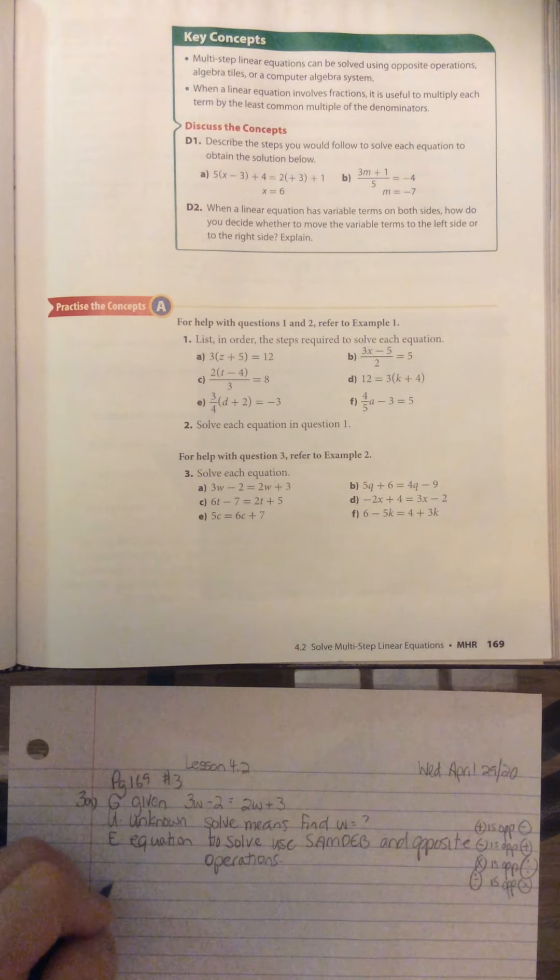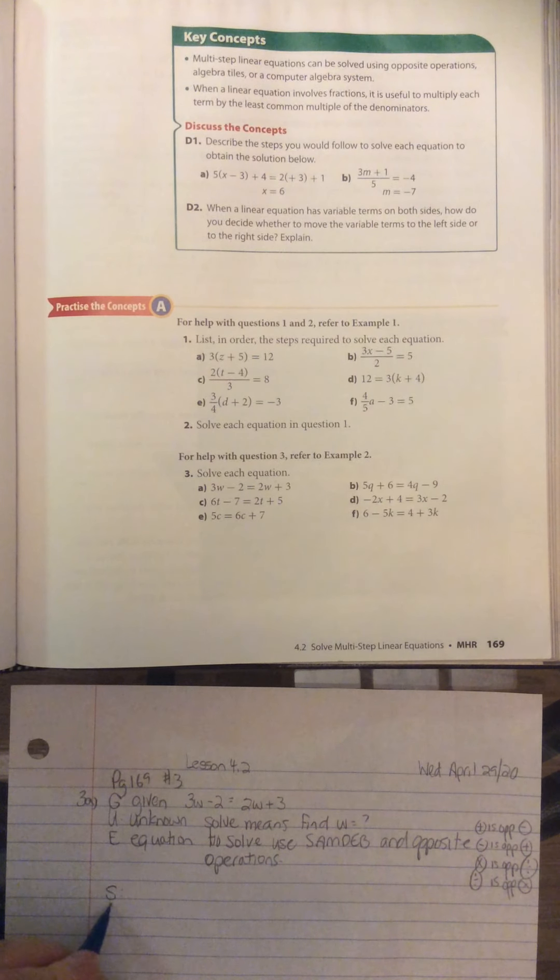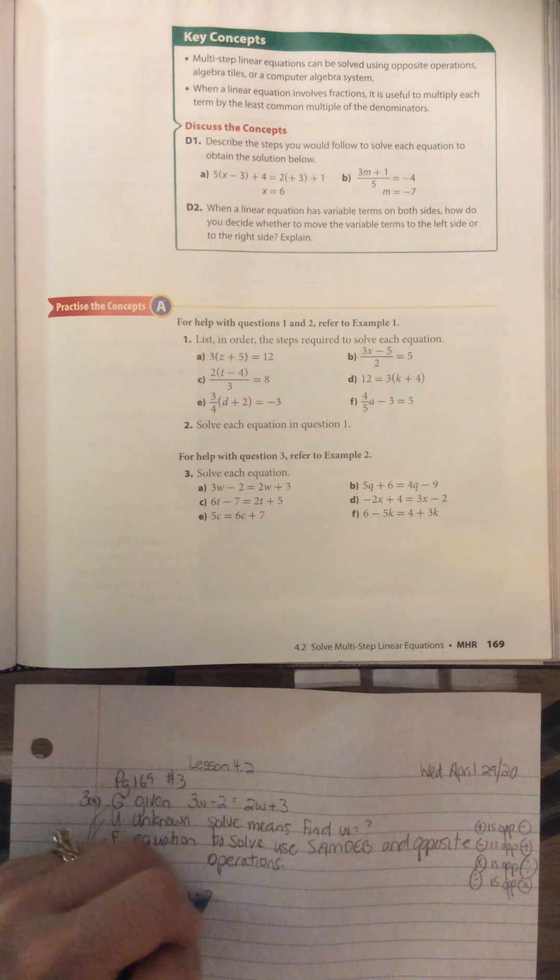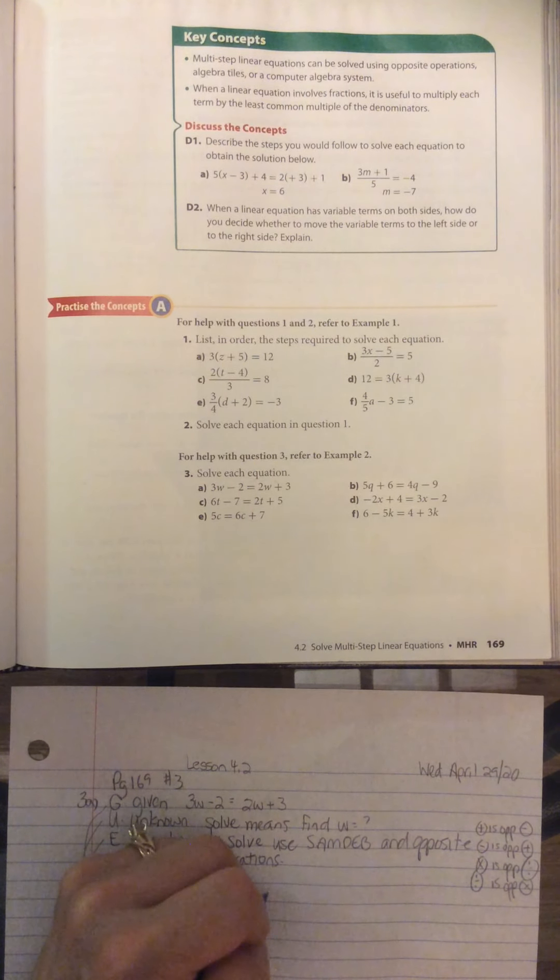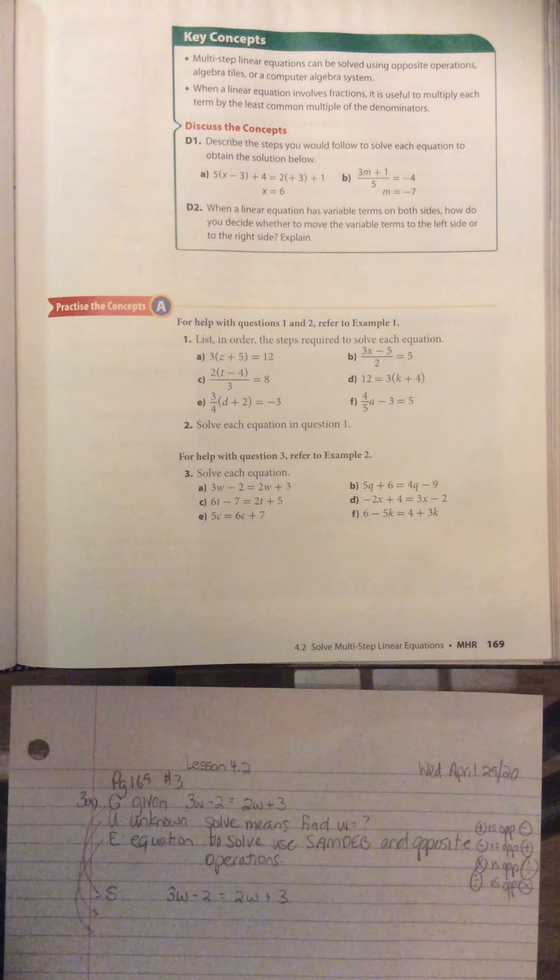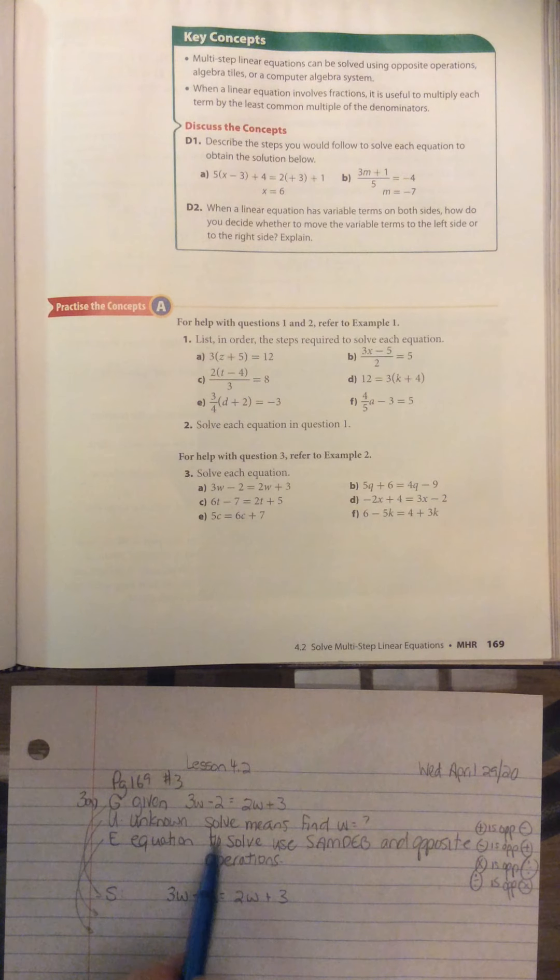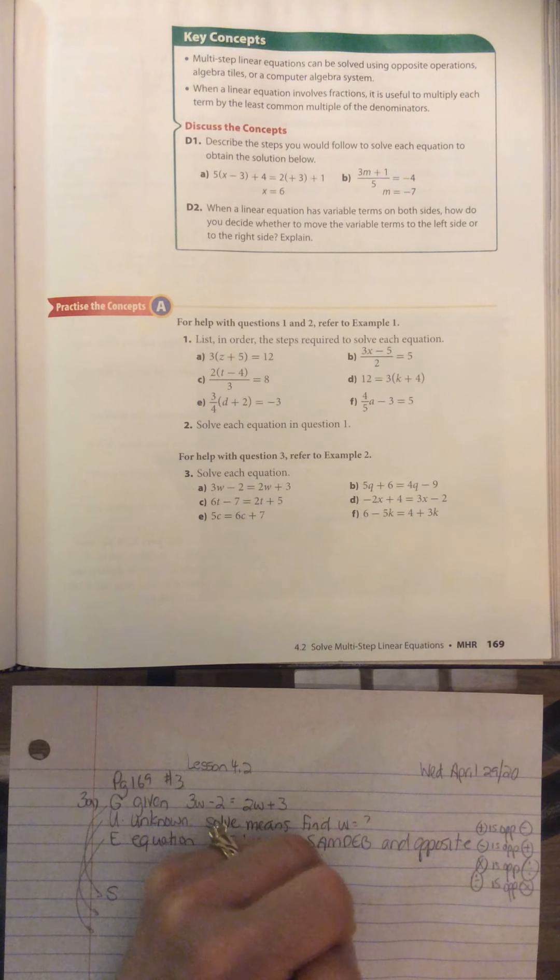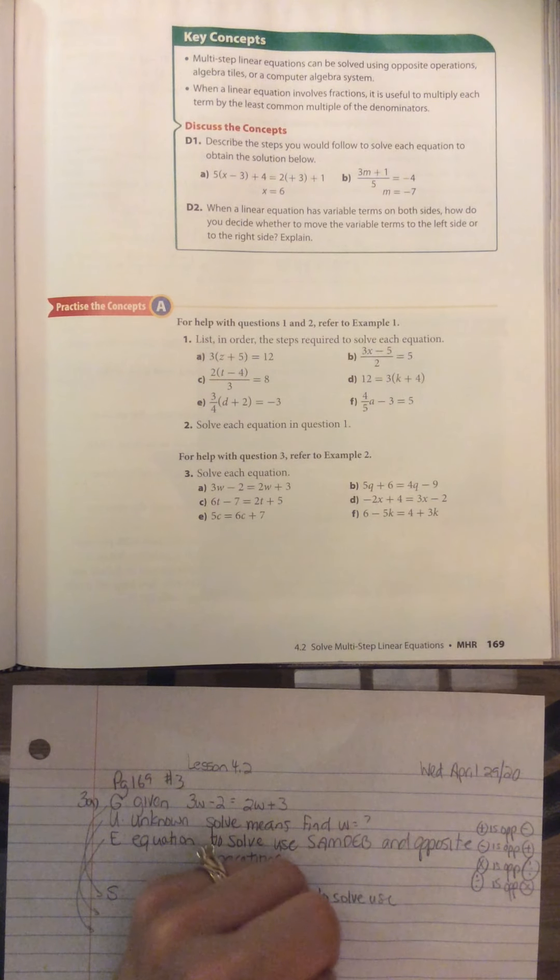Okay. So GUES, solution. Let's use a little bit of space here. Okay, so our solution takes what was given, the unknown, and the equation. Okay, so what was given is 3W minus 2 equals 2W plus 3. The unknown is to solve. Solve means find what W is. How do we do that? We use the equation. To solve, use SAMDEP and opposite operations. So to solve, use SAMDEP.